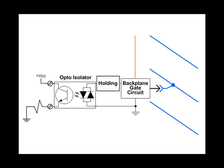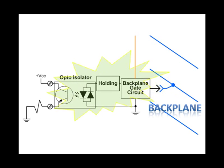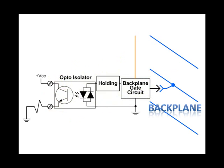Here we have rearranged the components, but I am sure that you recognize this circuit. From right to left, first you have several conductors of the backplane data bus in blue, a connector between the backplane and the I/O module, and the output circuitry of a single point of DC output.